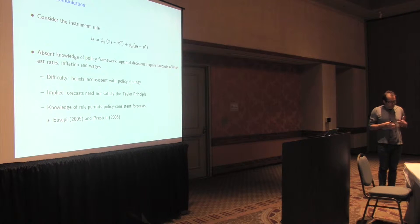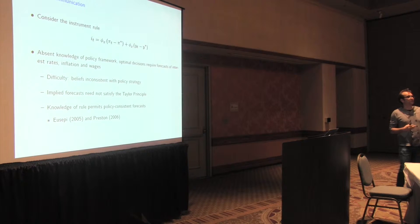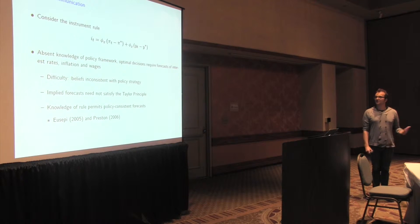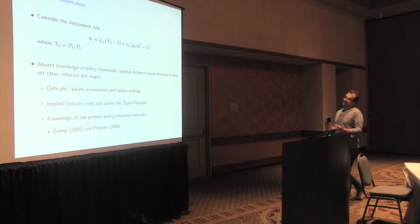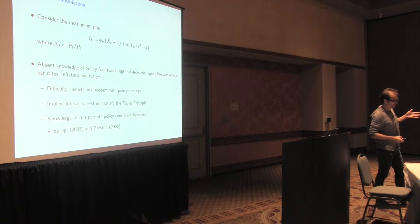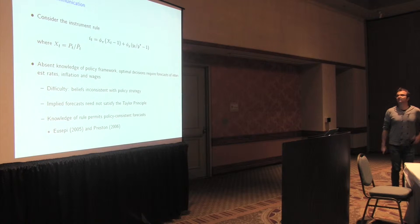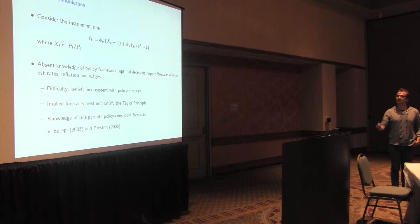So the way to think about this is, take any policy rule, this is just a log-linear Taylor rule that responds to inflation and deviations from some target and output from some target on the output gap. So the idea is that from this specification, individuals can think about just using any kind of statistical model to forecast interest rates, but the question is, well, what if they know something about how those interest rates are actually determined?